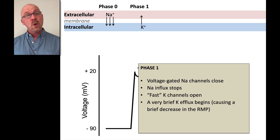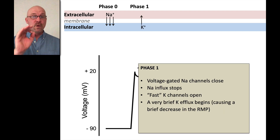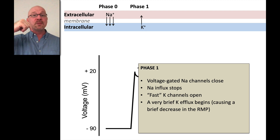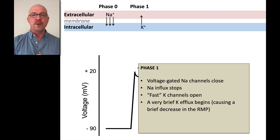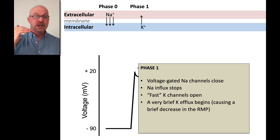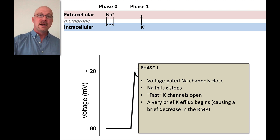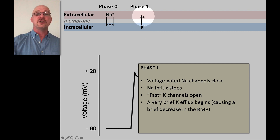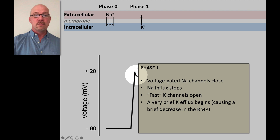In phase one, the voltage-gated sodium channels close — no more sodium rushing into the cell. The sodium influx stops, and some fast potassium channels open. Potassium starts rushing from inside the cell to outside, taking positive charges with it, so the inside of the cell starts becoming more negative.